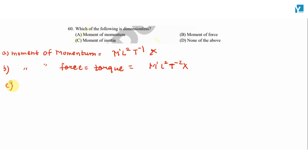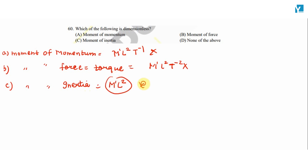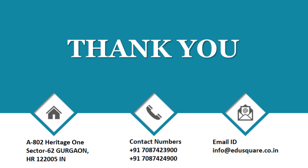Option C is moment of inertia, which has dimension M¹ L². So option D is the right answer, which is the dimensionless quantity.